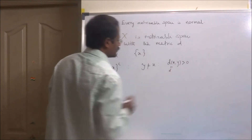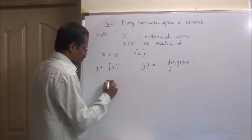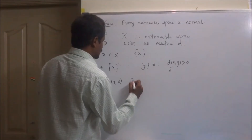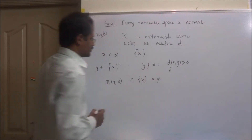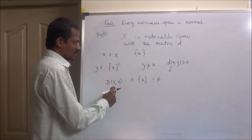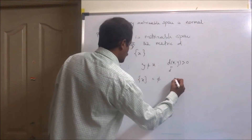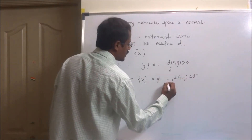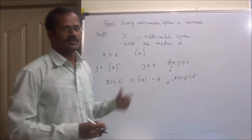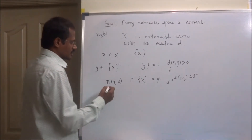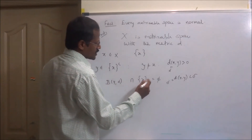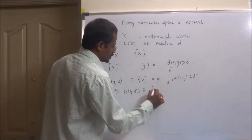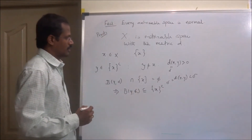Take this distance as delta. Now it is easy to observe that the open ball B(y, δ) intersected with the singleton {x} is equal to the empty set. Otherwise, if x were a member of this open ball, then d(x, y) would be less than delta. But we have chosen delta as d(x, y), which gives delta less than delta — not possible in ℝ. So B(y, δ) ∩ {x} cannot be non-empty; therefore it must be empty. Which means the open ball B(y, δ) is contained in {x}^c.